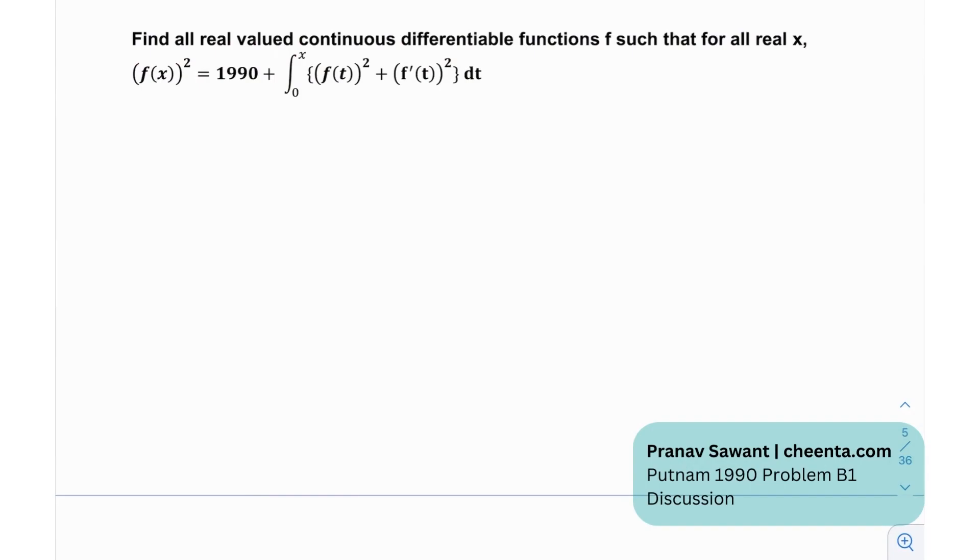Let's see what they've given. We need to find all real-valued continuous differentiable functions f such that for all real x it satisfies this given equation: f(x)² = 1990 plus this long-looking integral. When I see this, when I see something of this form...